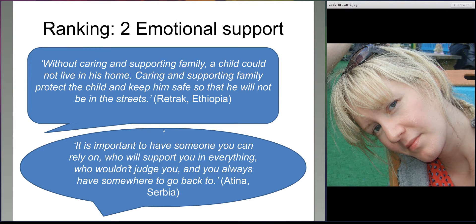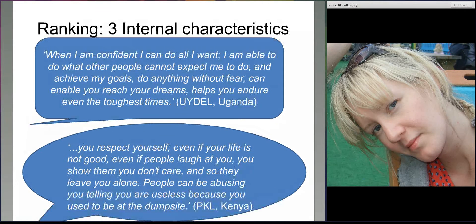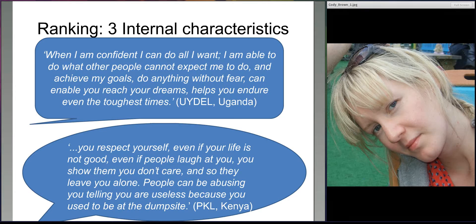Around emotional support, the boys in Ethiopia talked about how without a caring and supporting family, it's very difficult for children to stay safe and protected, meaning they'll go back on the street. The girls in Serbia talked about how important it is to have someone you can rely on, who will support you and won't judge you, someone you can always go back to. In terms of internal characteristics, the girls in Uganda talked about how when you're confident you can do anything, achieve your goals, do anything without fear, and endure the toughest times. The younger girls in Kenya also talked about how important it was to respect yourself, even if life wasn't good, so that you can stand up to people even if they say bad things about you.